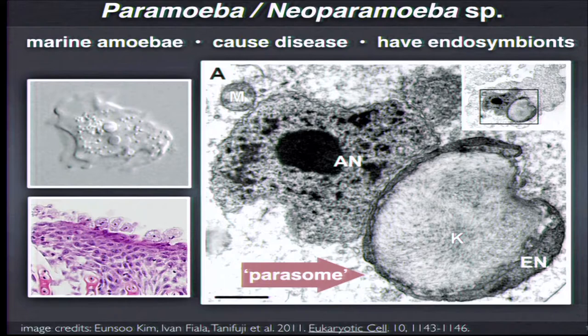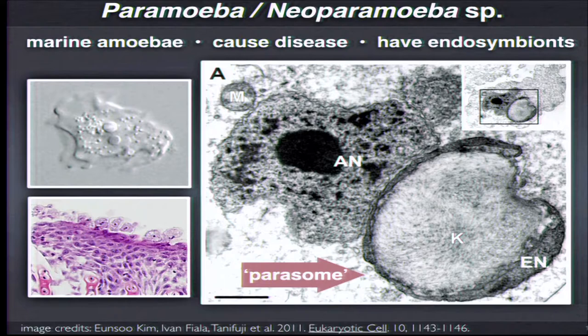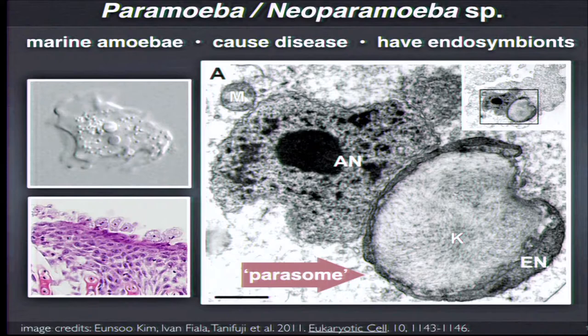I'm going to contrast the nucleomorph story with a new system. When we think about eukaryote-eukaryote secondary endosymbiosis, it invariably revolves around acquired phototrophy — a non-photosynthetic host acquiring a phototrophic alga makes intuitive sense. The particular system I'll talk about now does not make as much sense, as you'll see.